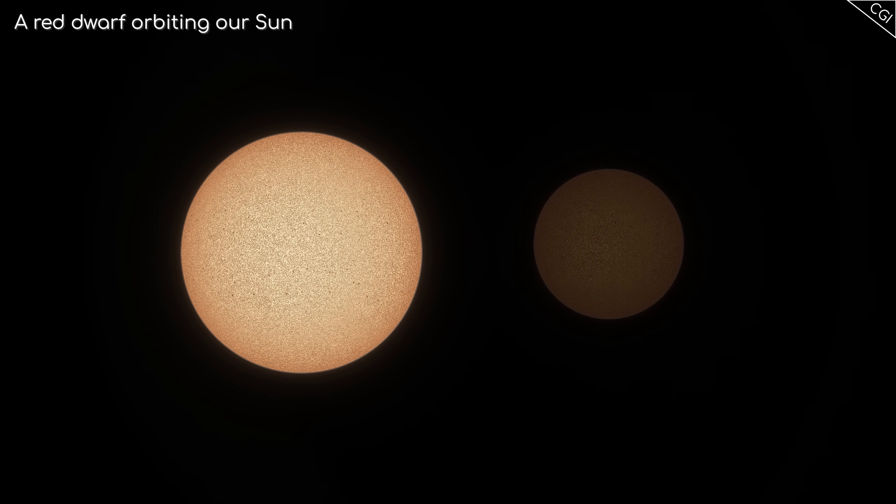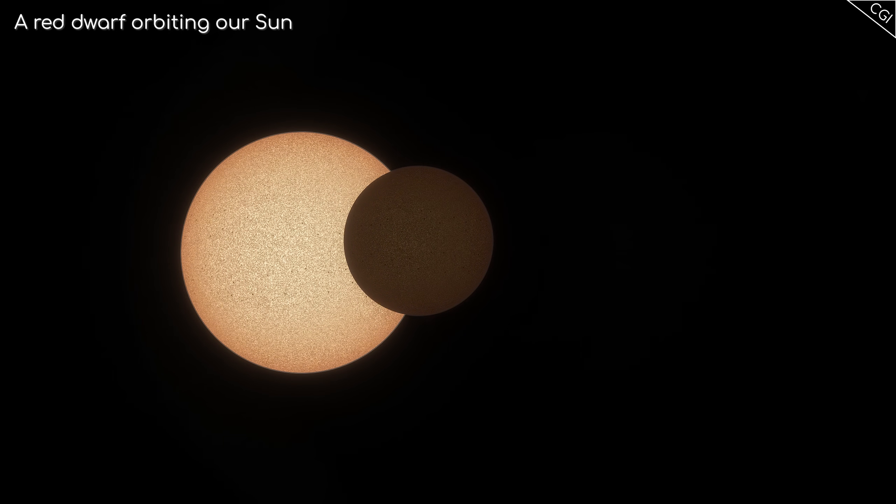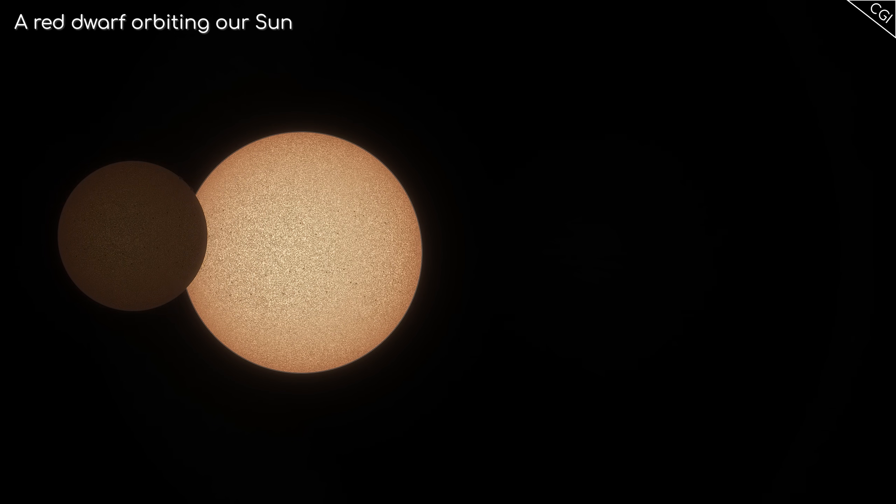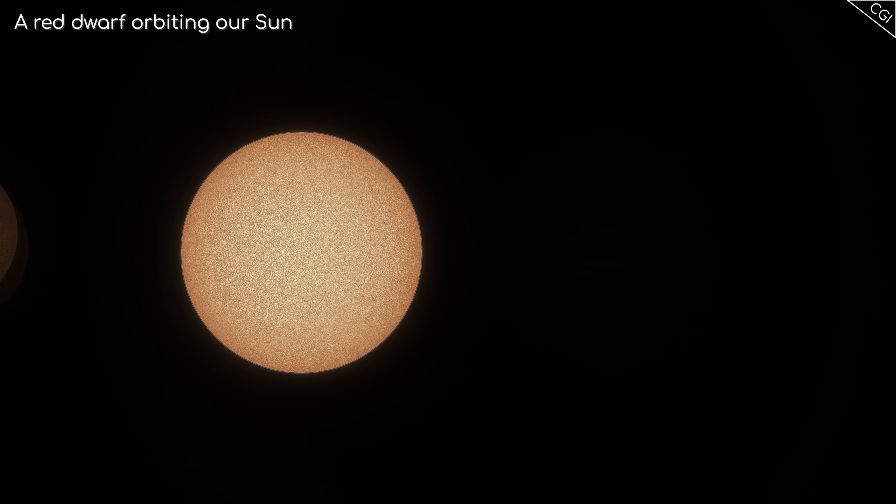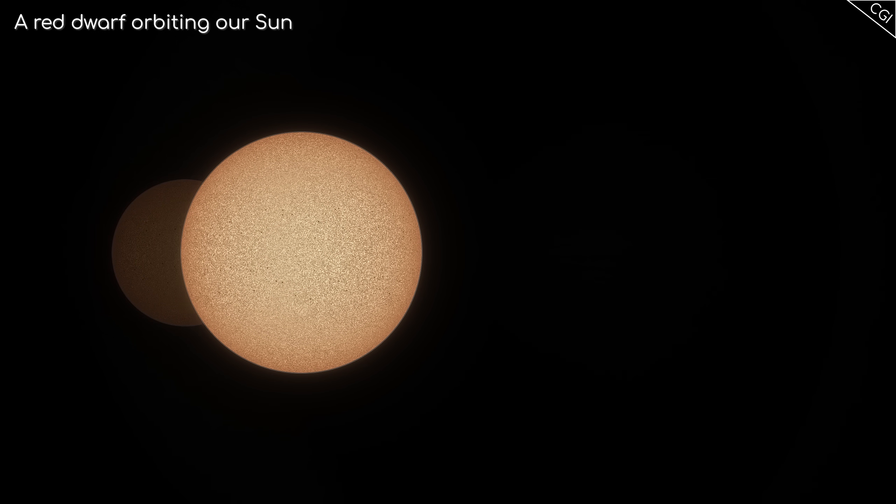From our perspective, the star would look like it orbits the sun, meaning there would be times when it transits in front of the sun, and other times where it is eclipsed by the sun.